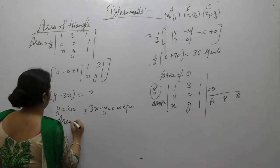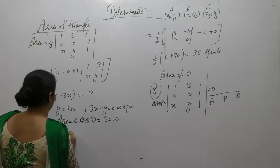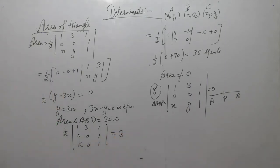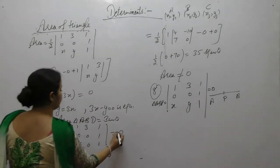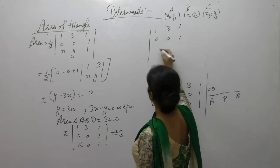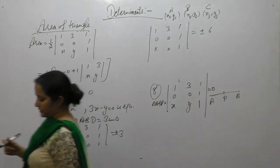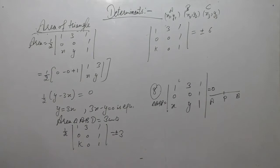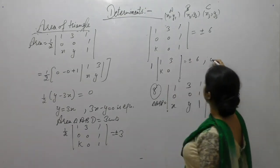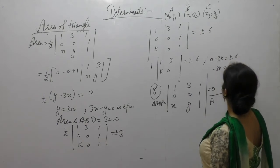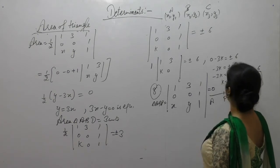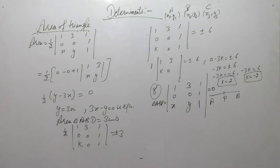Now find K if D(K,0) is a point such that area of triangle ABD is 3 square units. Area = 1/2 times determinant with rows (1,3,1), (0,0,1), (K,0,1) equals 3. When 2 goes to the right-hand side, the determinant equals 6. Expanding along the second row gives 0 - (-3)(K-0) + 0, so 3K = ±6, giving K = ±2.